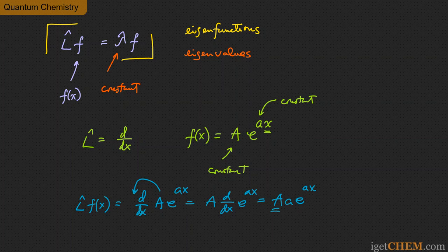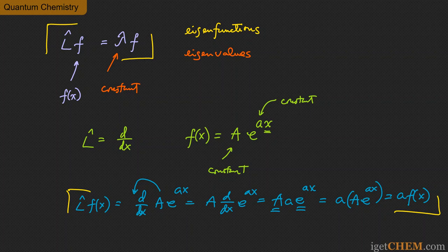That is the result of applying L onto f. Looking at the right side, you can rewrite this as a multiplied by big A times e to the power ax, and you can see that is just a multiplied by f(x). So L operated on f gives you back a times the same function f — this in fact satisfies the eigen equation. From that you can just read out the eigenvalue: lambda equals a for this function.